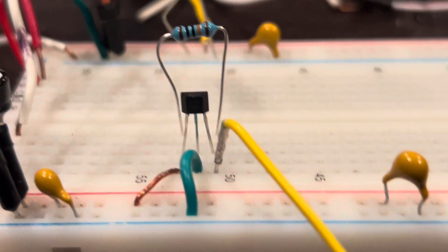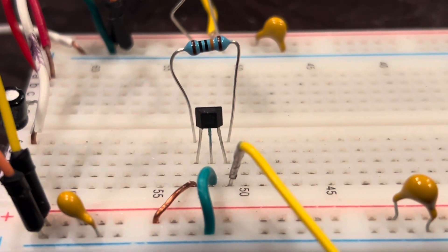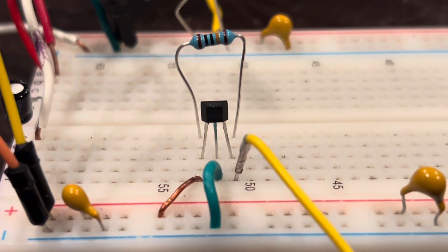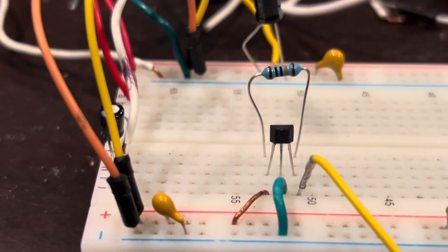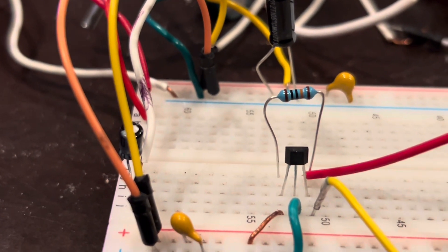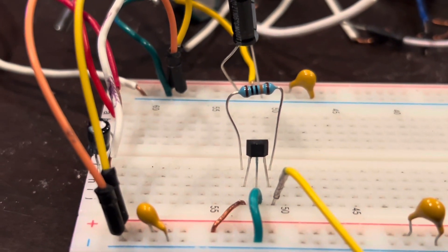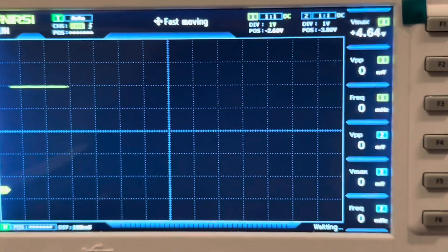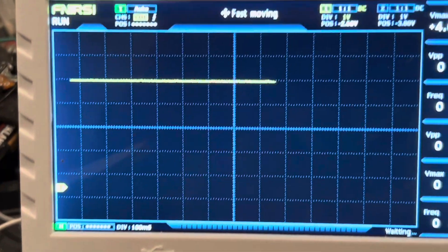So now we have the hall sensor. Pin one is to power, to VCC five volts. Pin two is to ground, and the yellow wire is the oscilloscope probe. Basically I have a 100k resistor as a pull-up resistor between pin three and pin one which is going to VCC five volts. As you can see on the oscilloscope it's reading five volts. That is the pull-up resistor in action.